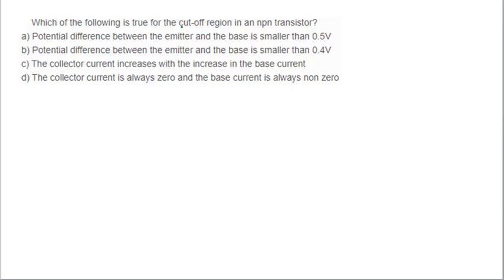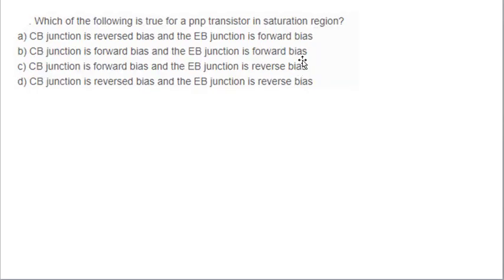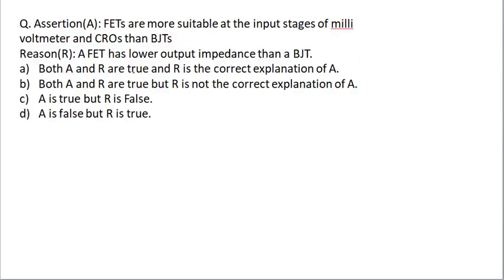Which of the following is true for the cutoff region in an NPN transistor? Cutoff region is reverse biased. Therefore, option B, potential difference between the emitter and the base is smaller than 0.4 volt. Saturation region means both the junctions, both the junctions will be forward biased. And cutoff region, both the junctions are reverse biased. Therefore, option B is the correct answer. CB junction is forward biased and the EB junction is also forward biased. CB is the collector base junction. EB is the emitter base junction.